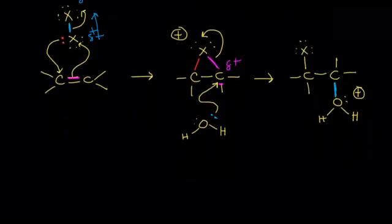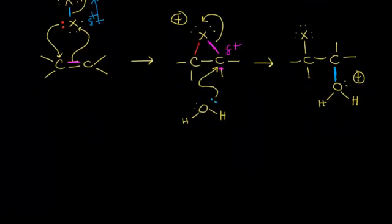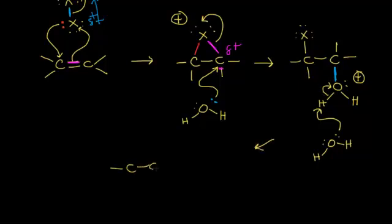The last step of the mechanism is just an acid-base reaction — another water molecule comes along, and one of its lone pairs functions as a base, taking a proton and leaving those two electrons behind on the oxygen. We have finally formed our halohydrin, with the halogen on one side and the OH on the opposite side.